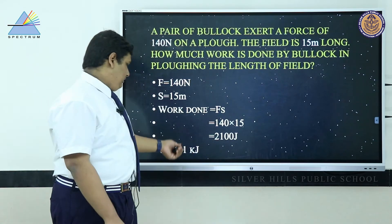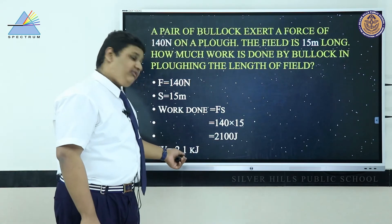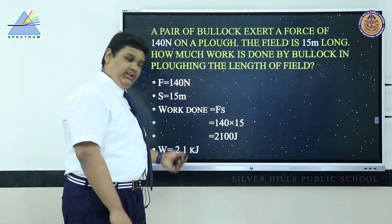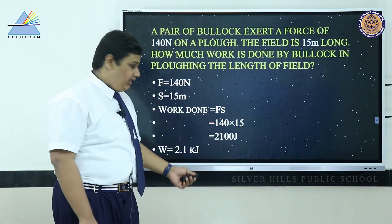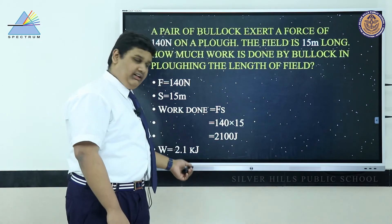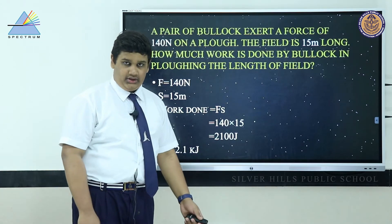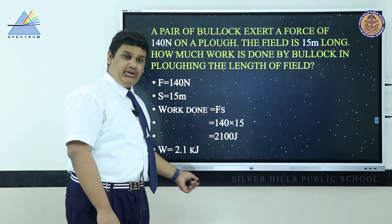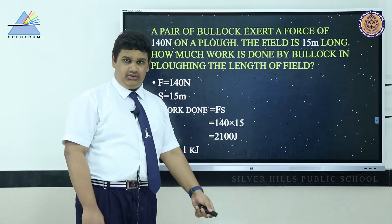Converting joules into kilojoules by dividing by 1000, we get 2.1 kilojoule.